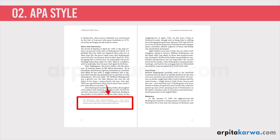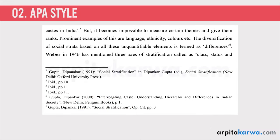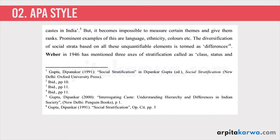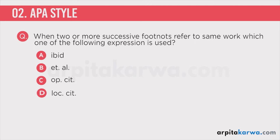In APA format you will also have References and Footnotes in the last section of your thesis. Another important thing to understand is the term 'ibid' — I-B-I-D. This is an expression used when two or more successive footnotes refer to the same work. Suppose I have given two references about the Greek god Zeus; both these references are going to use the expression 'ibid,' which is an abbreviation for a Latin word meaning 'in the same place,' indicating that both sources are the same. This was a question in the NET exam — when two or more successive footnotes refer to the same work, the correct expression used is 'ibid.'